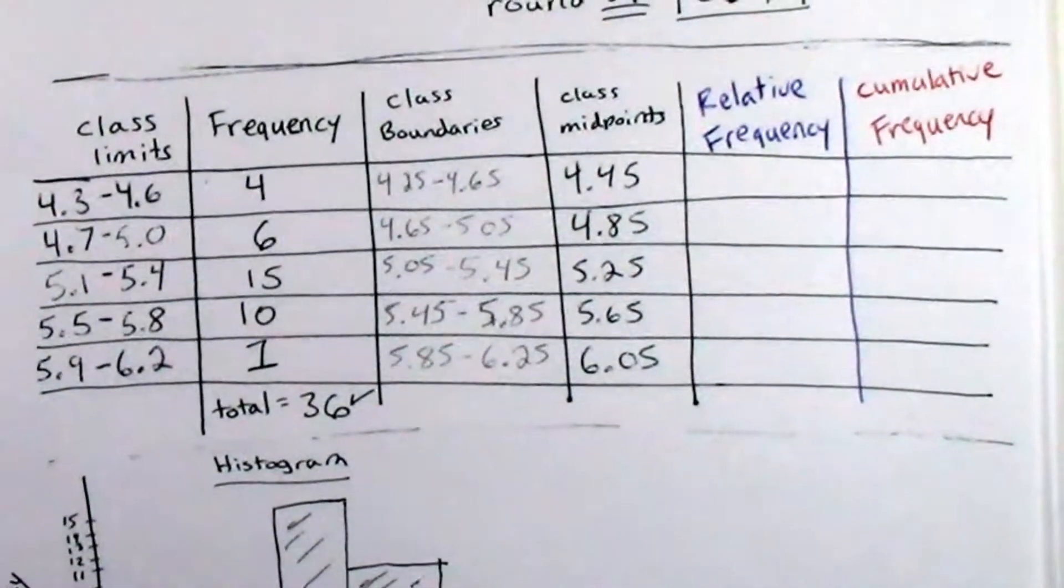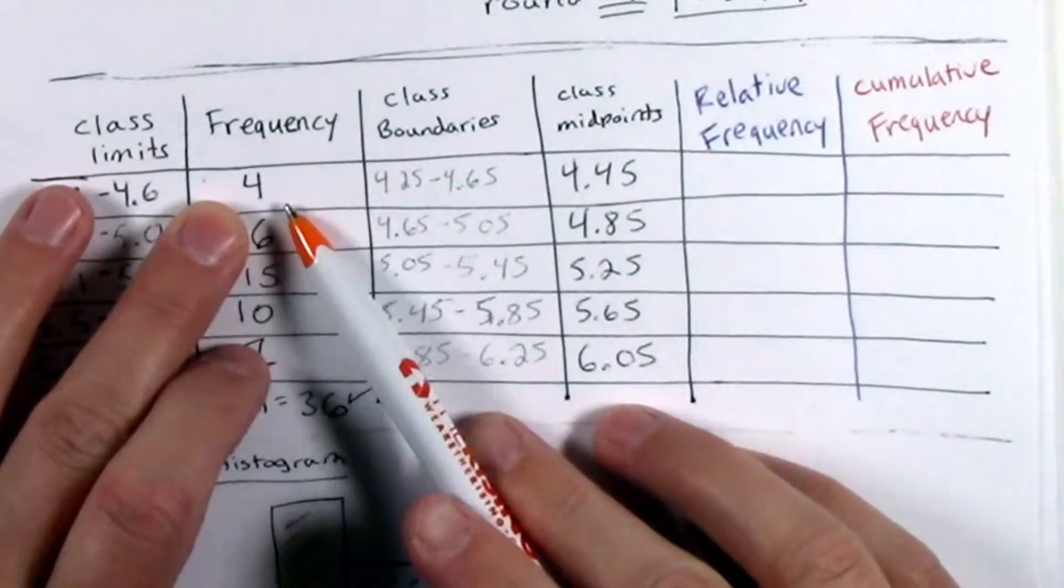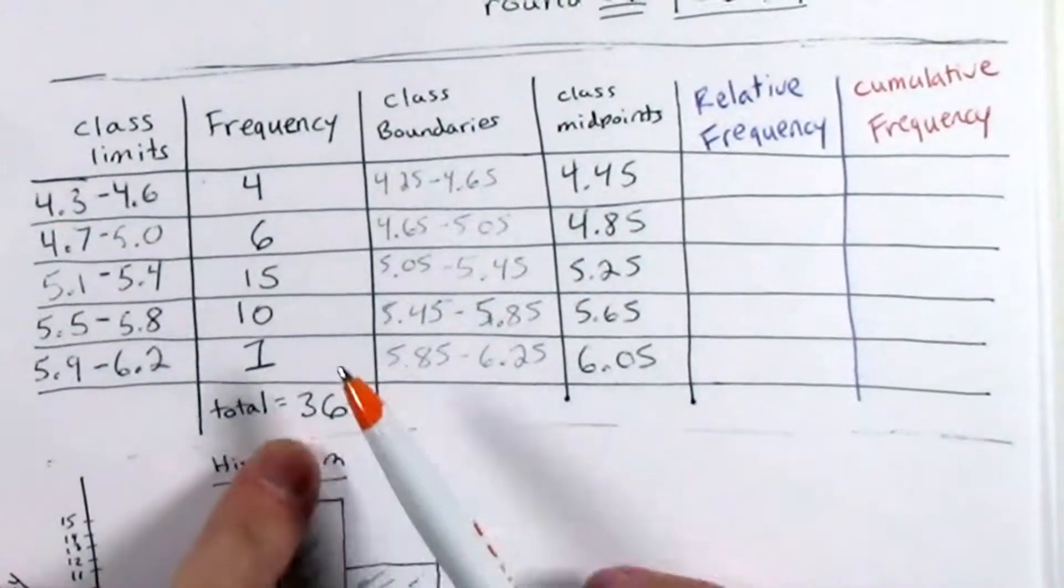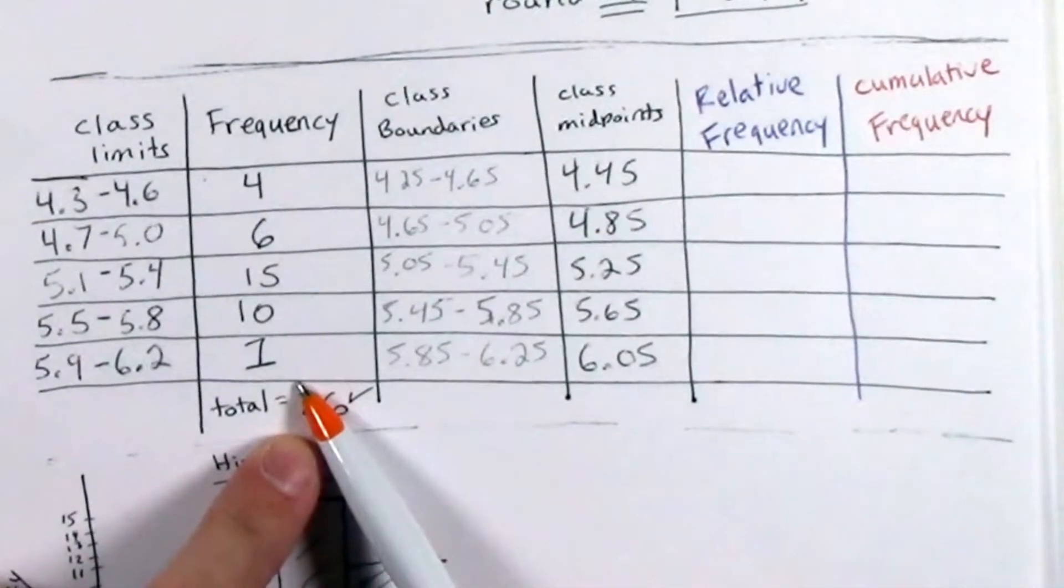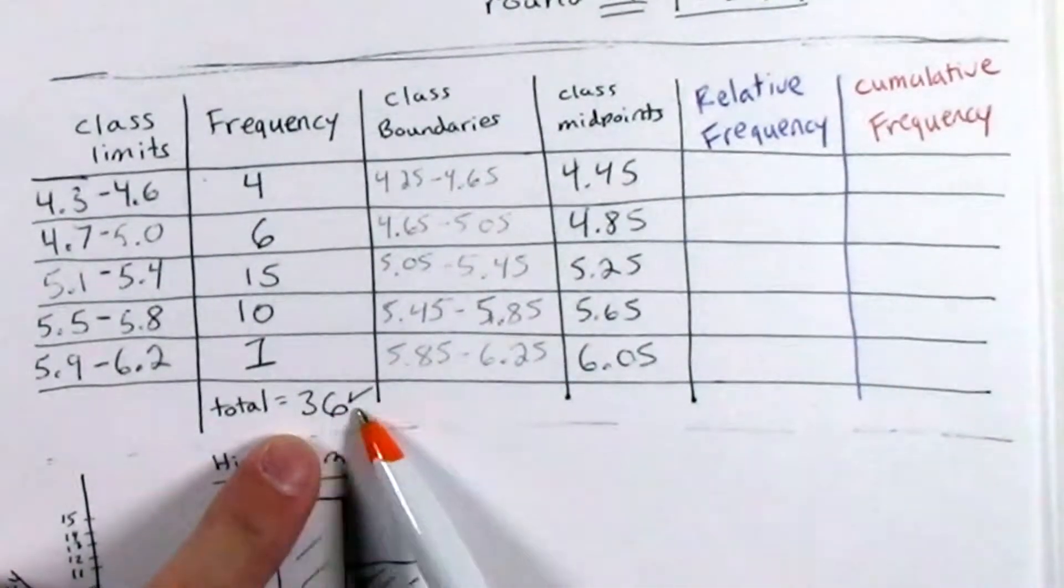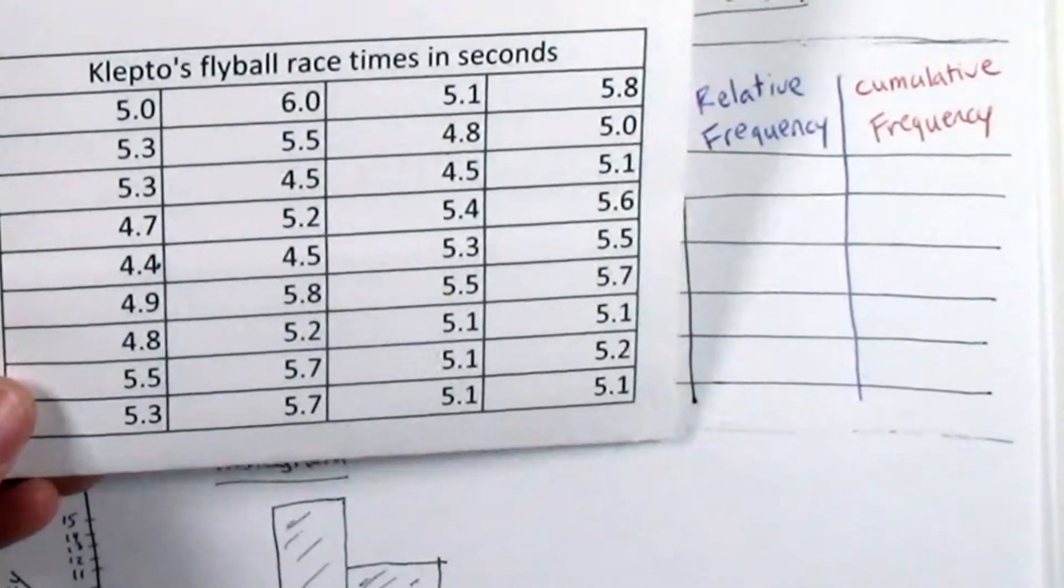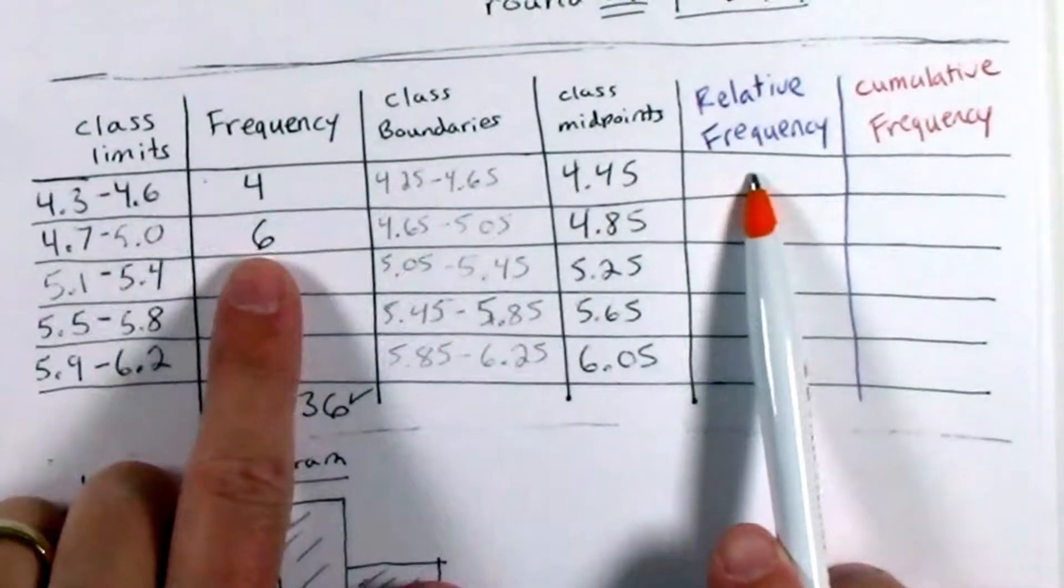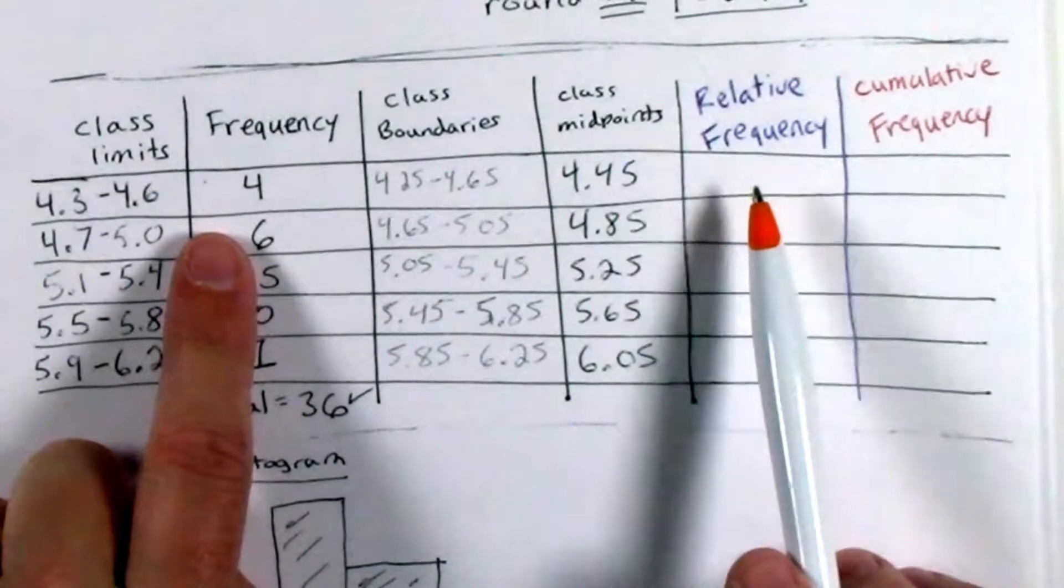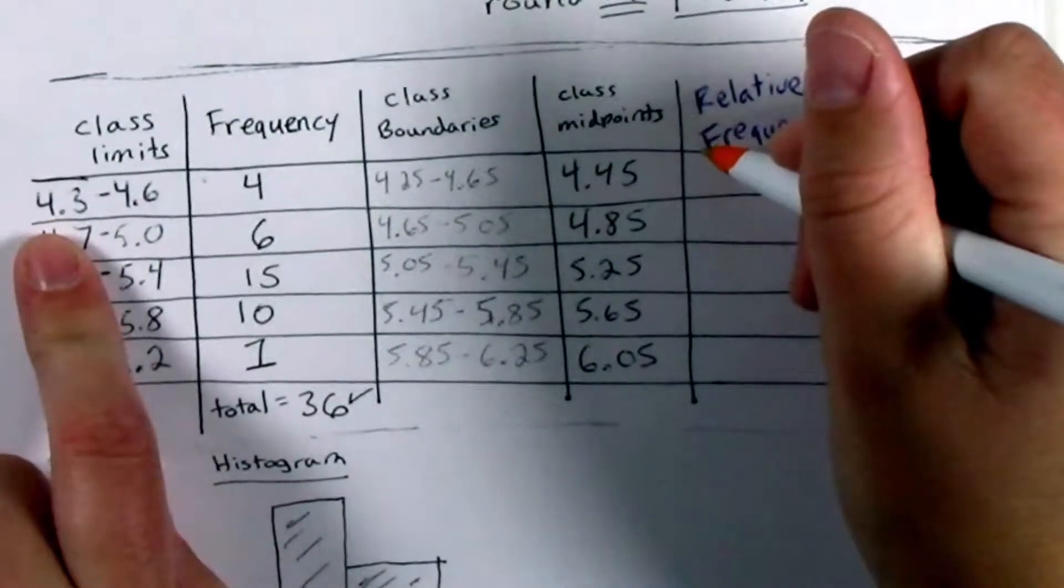Okay, so starting with the relative frequency. Relative frequency is the frequency relative to the total. So recall, the total is just the sample size. In other words, the number of data that you had in your original data set. You can also get the total by summing up all of your frequencies in the frequency column.